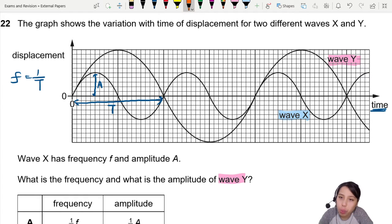Amplitude is bigger, right, for wave Y. Amplitude goes all the way up here for wave Y. So this is wave Y's amplitude. Two times bigger. So this should be 2A.